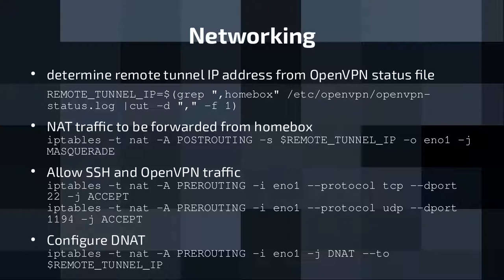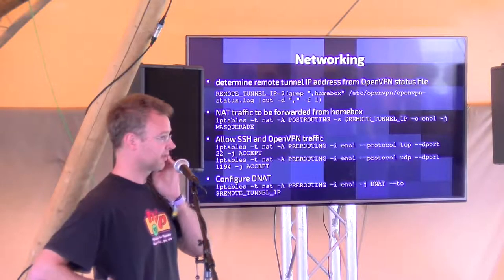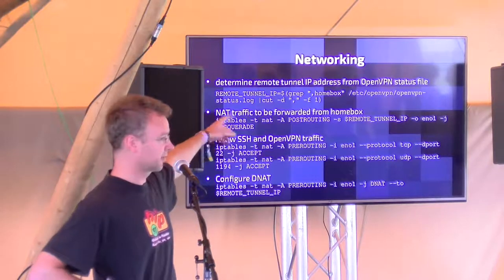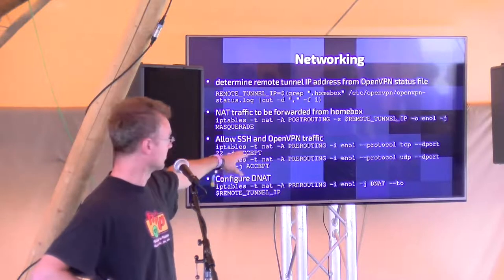Remember the diagram I showed earlier — we want to forward everything that hits the VPS to the homebox, except SSH so we can still configure the VPS. OpenVPN creates a status file called openvpn-status.log, and we grab the IP address of the other side from that. Then we use it to set up the firewall rules.